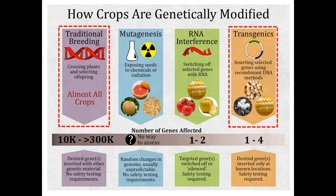We're going to be comparing two different ways that our crops and plants are genetically modified to benefit humans. One of those is through traditional breeding, where you cross plants together and choose which offspring to continue breeding. And then we'll talk about what's called transgenics, where we take genes from specific organisms and put them into other organisms using recombinant DNA methods. There are other methods as well, with benefits and pros and cons to each.